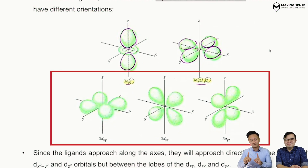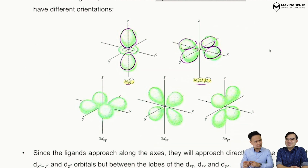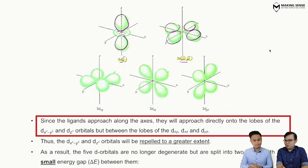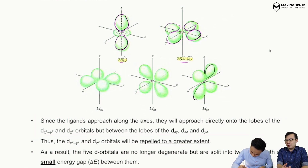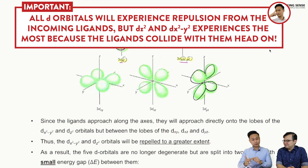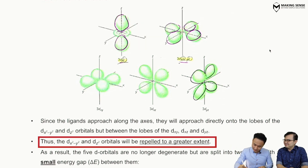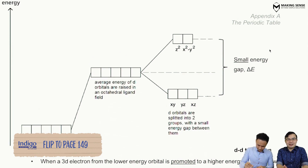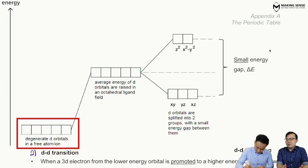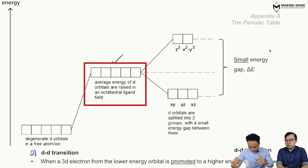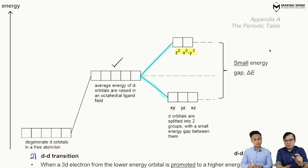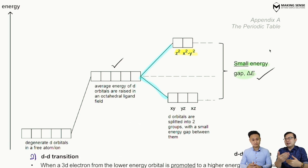The dz² and dx²−y² orbitals will be repelled to a greater extent, so their energy will be higher relative to the rest. Originally, without any ligands, all five d orbitals are degenerate — they all have the same energy. But the moment ligands approach, the d orbitals split into two different energy levels: dz² and dx²−y² go to a slightly higher level, while dxy, dxz, and dyz remain lower. This creates a small energy gap between them, which we call delta E (ΔE). This is d-d splitting — the d orbitals have split into two sets of energy levels.